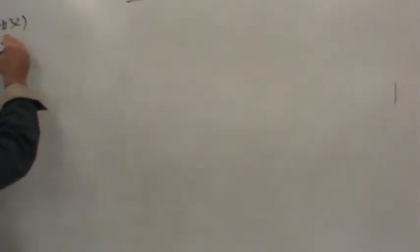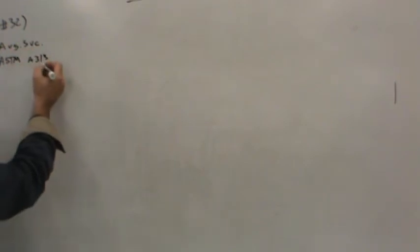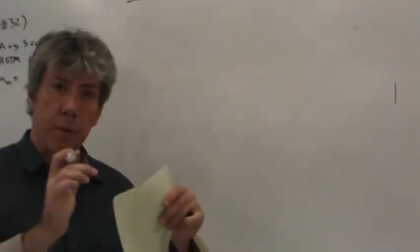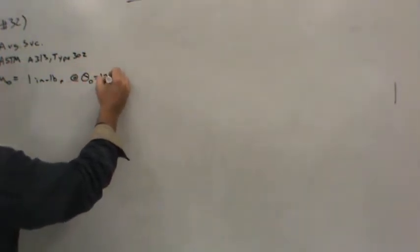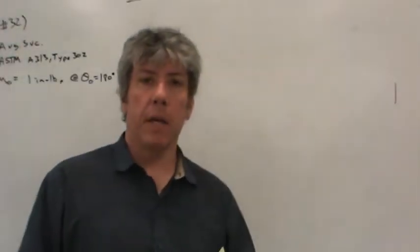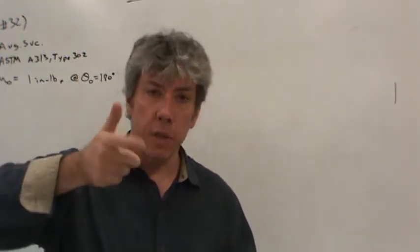So this is for average service. The material is ASTM A313, which is a stainless steel type 302. We know that the operating moment, now remember for extension and compression springs we talk about operating forces, but for torsion springs there's an operating moment or torque. It needs to be one inch-pound at a deflection of 180 degrees. Be careful about this because in a linear spring the deflection is a linear straight line deflection, but in a torsion spring deflection is a twist angle. So 180 degree twist angle needs to develop one inch-pound of torque.